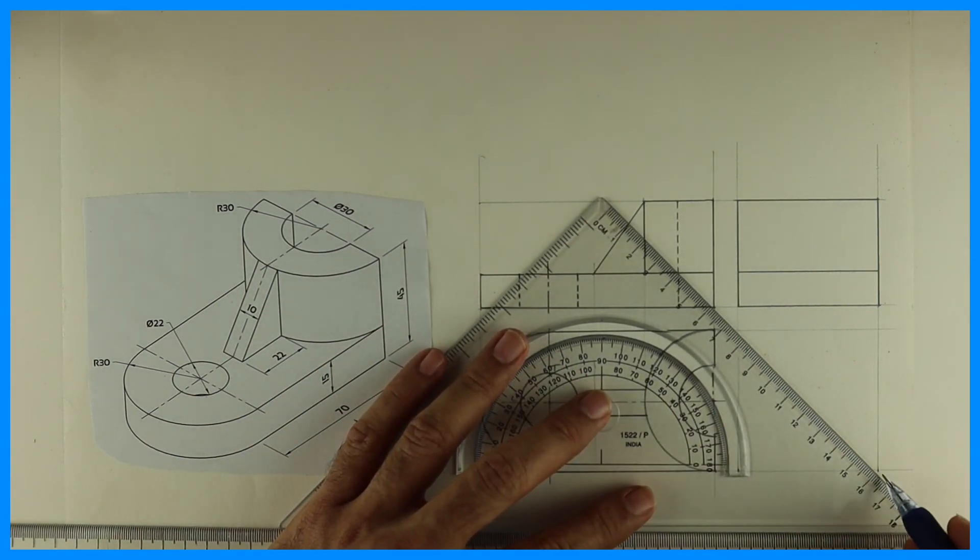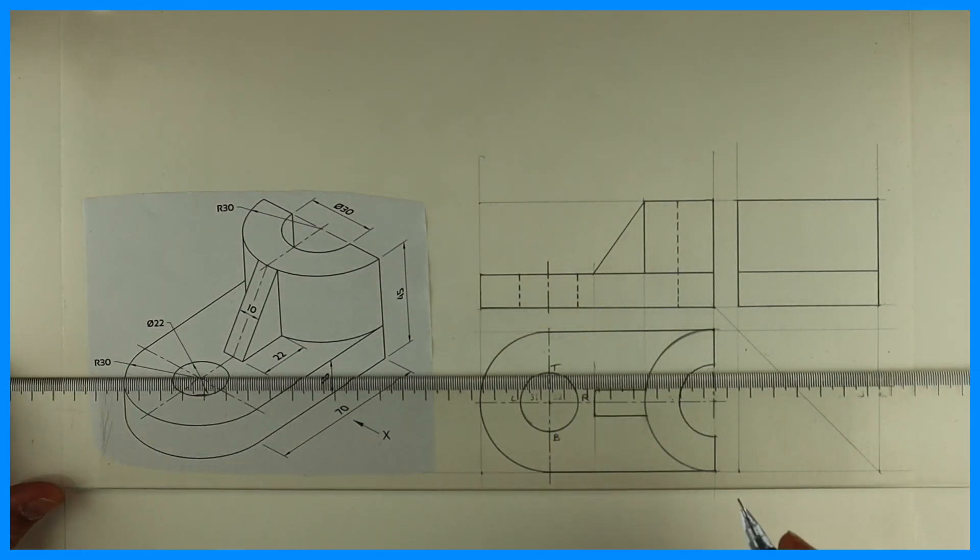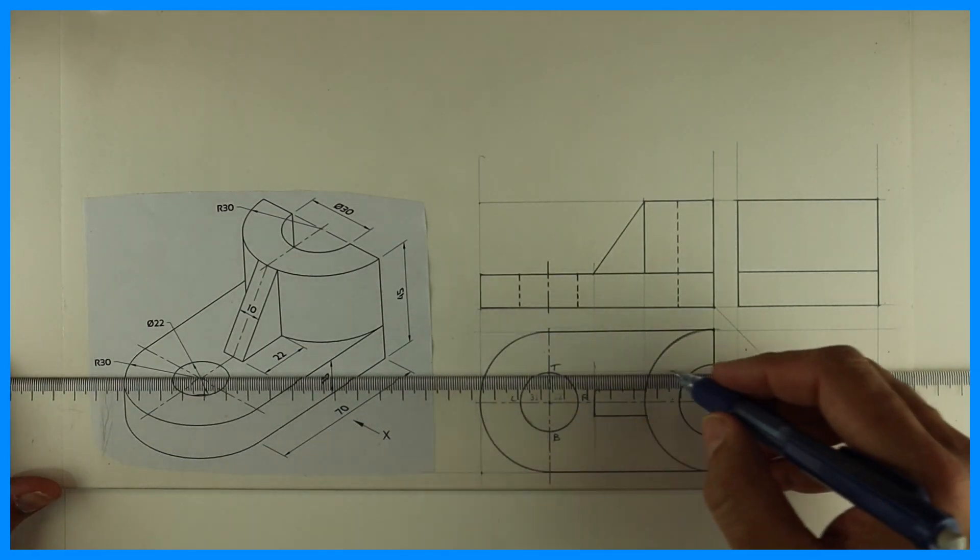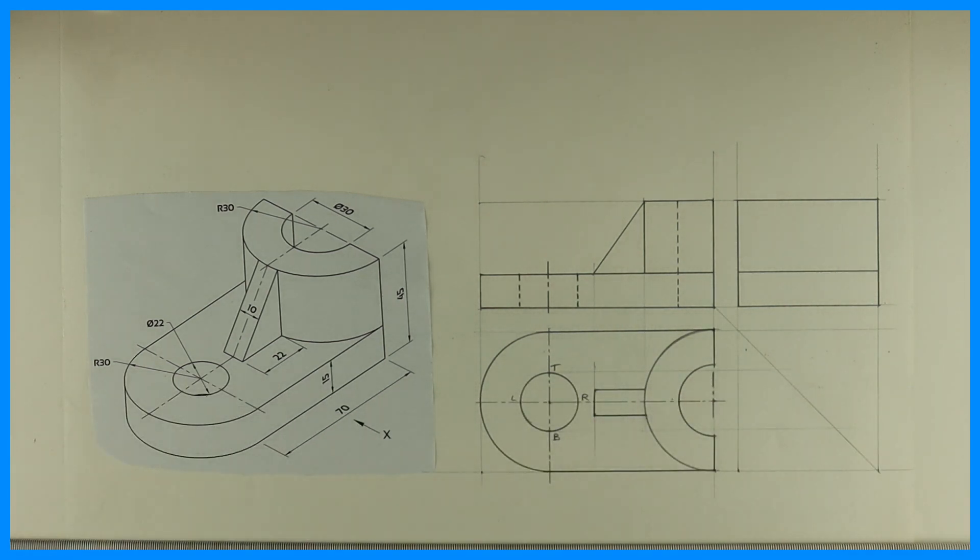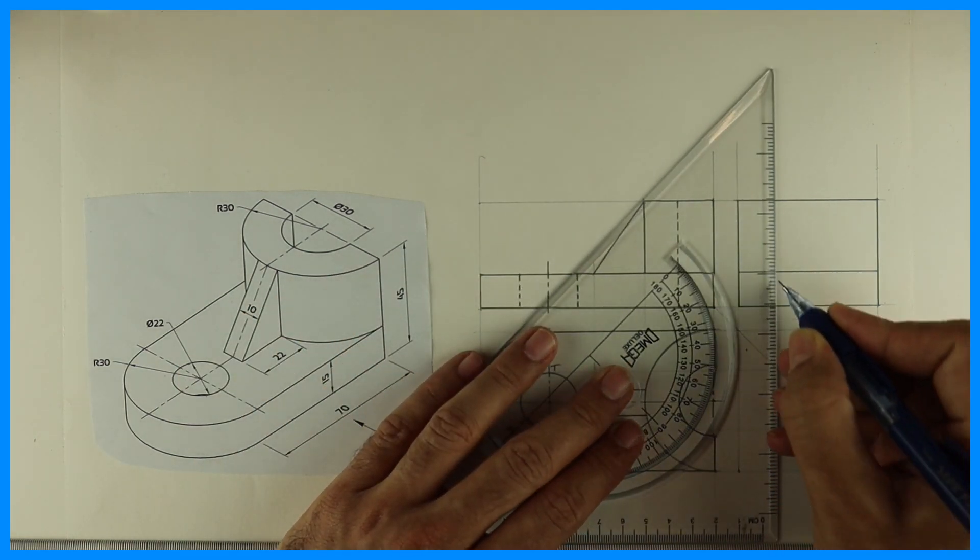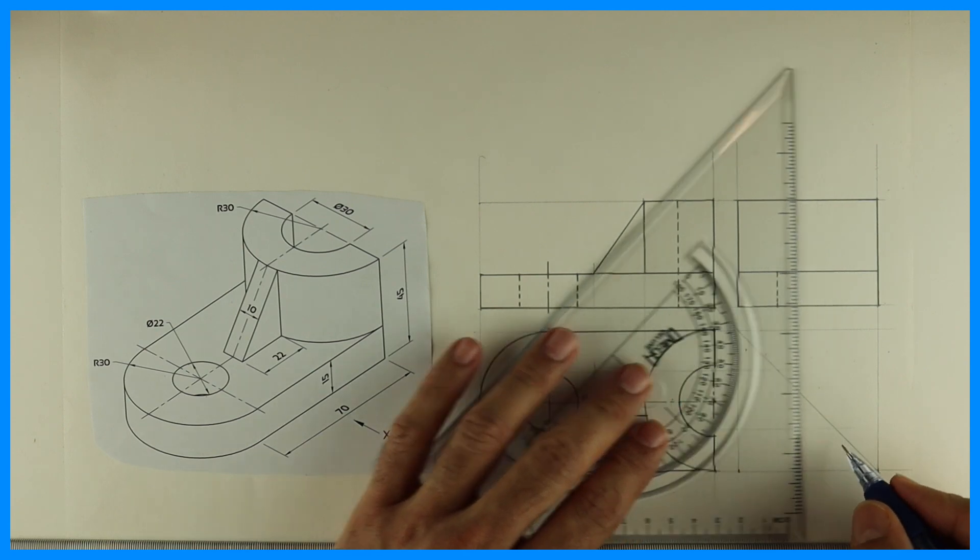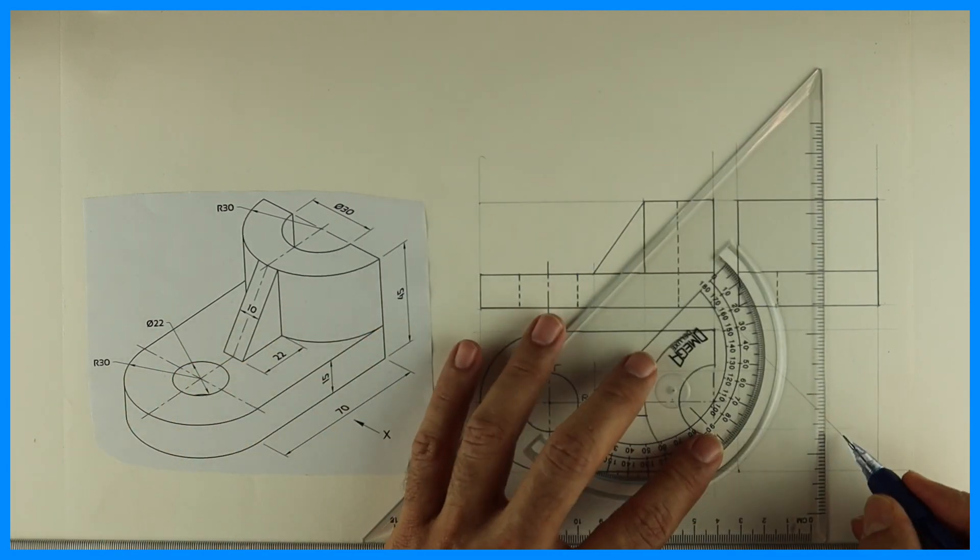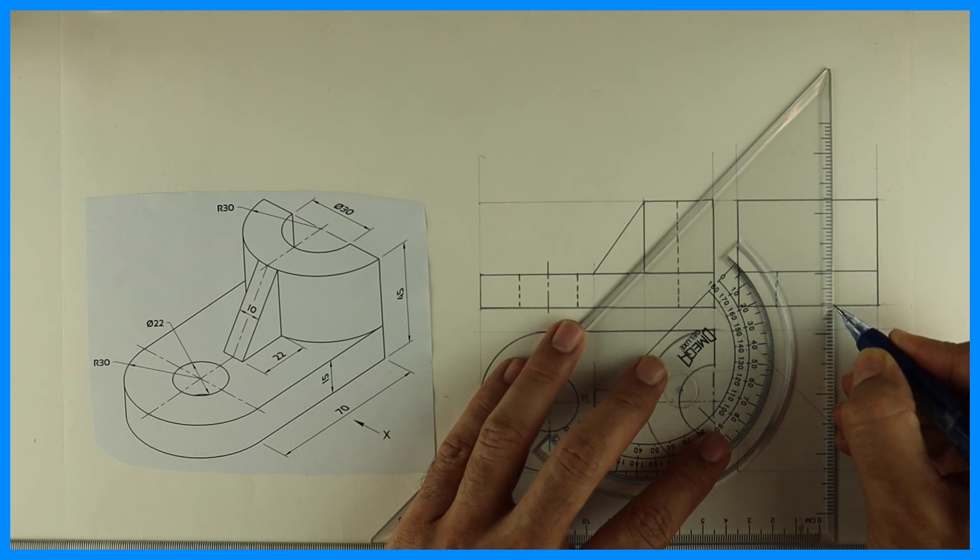We can project with 45 degree. Now I'm projecting that extreme top and bottom point of the circle, which is of radius 11, diameter 22. So we'll have T and B. So those two dotted line inside view.